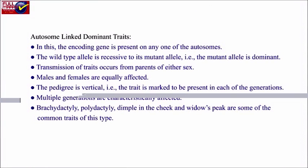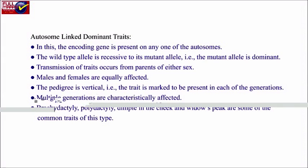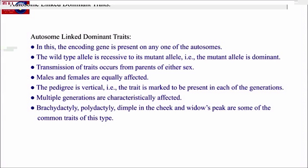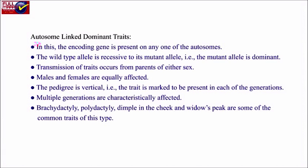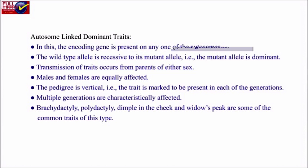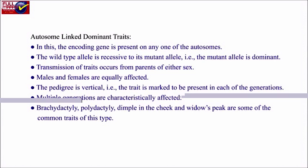Autosomal dominant trait: This involves an encoded gene present on any of the autosomes. The wild-type allele is recessive while its mutant allele is dominant. Transmission of traits occurs from parents of either sex — male or female are equally affected. The pedigree is vertical, meaning the trait is present in each of the generations.